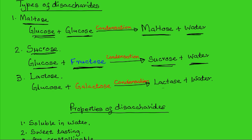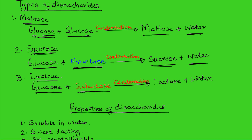The third type of disaccharide is lactose, also known as the milk sugar, because it is formed from the condensation of a glucose molecule and galactose — the milk monosaccharide — to give lactose and water.